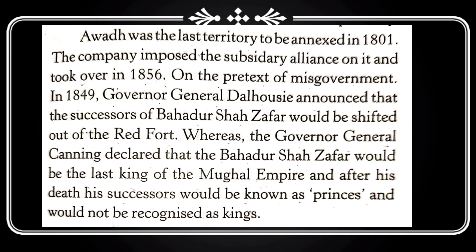The company also wanted to end the Mughal dynasty. For this, a proper plan was made and was being implemented gradually. First of all, the company removed the name of the Mughal king from coins. An announcement was made in 1849 by Lord Dalhousie that the family of the Mughal emperor would be shifted out of the Red Fort after the death of Bahadur Shah Zafar, and they would be given some other place in Delhi as residence.